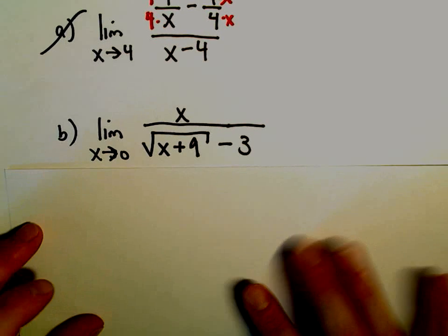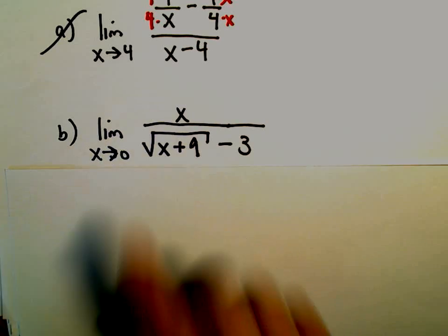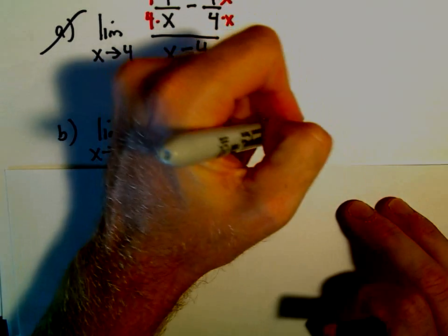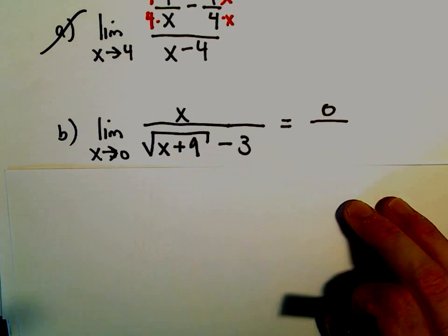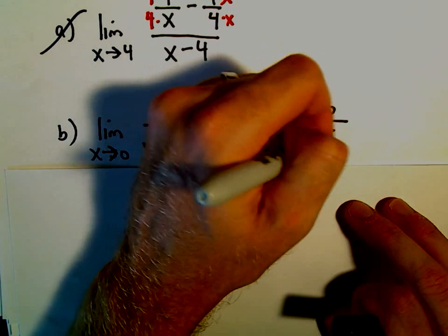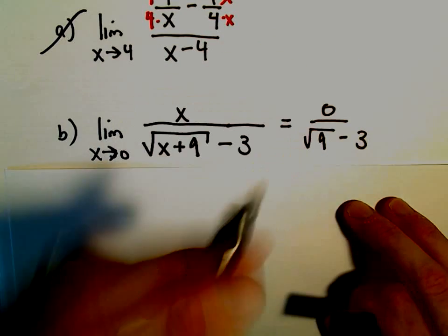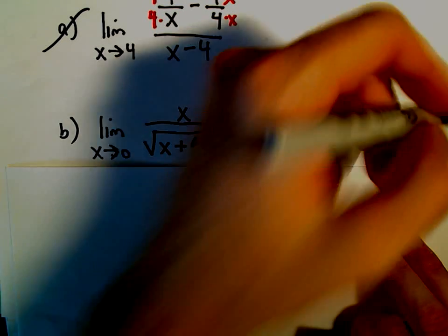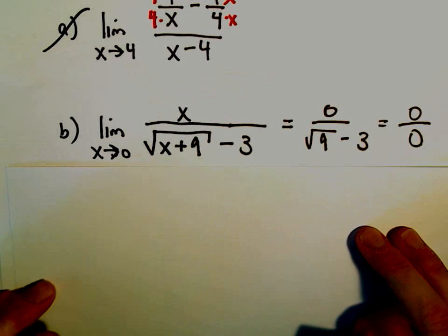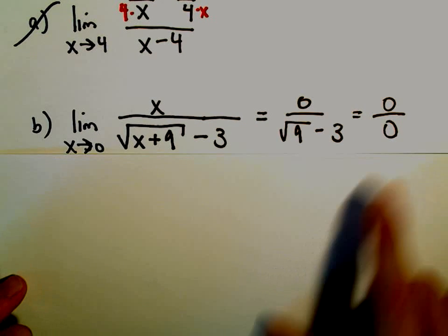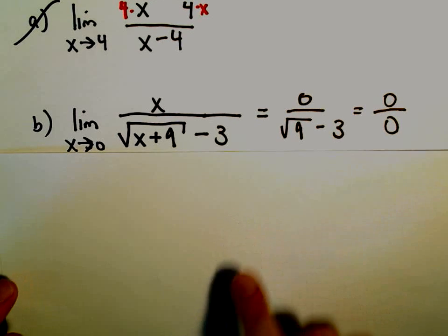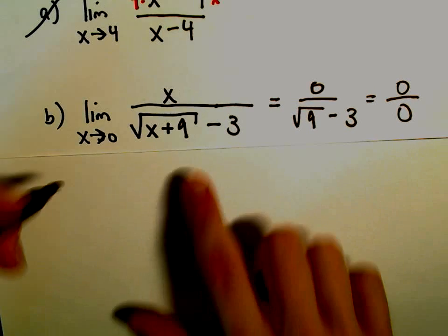And again, we could just try to plug in x equals 0. But if we did that, we would get 0 in the numerator. We would get 0 plus the square root of 9, or just the square root of 9, minus 3. Well, the square root of 9 is 3, so we would have 0 over 3 minus 3, or just 0 over 0. So that doesn't really tell us anything that's going on.